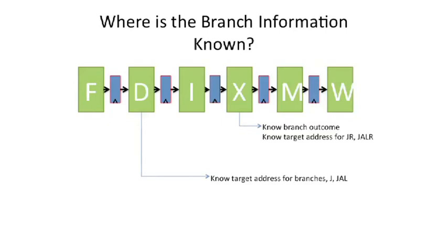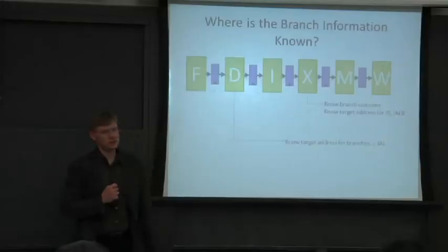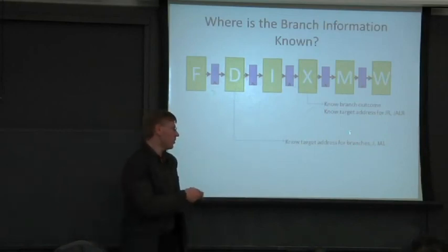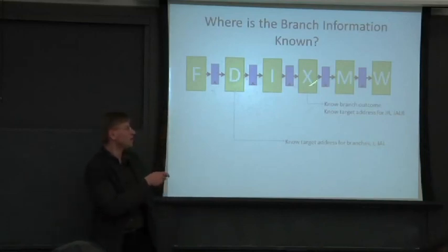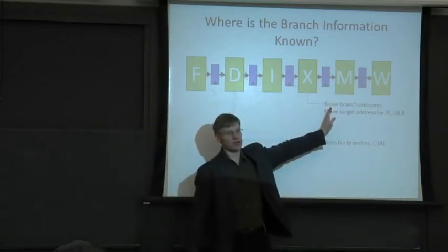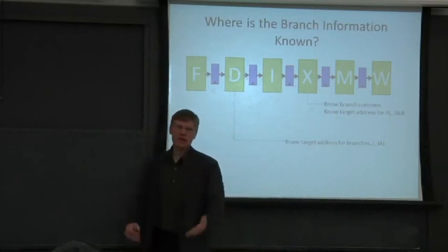Let's look at where everything gets known. The target address for branches, jumps, and jump-and-link will likely be known here. But that's not helpful unless we know which way the branch is going or the branch outcome. For jumps and jump-and-links, we know the outcome - it's taken. But for conditional branches, we may not know that until somewhere over here. We can't necessarily use that information until later in the pipe for branches in the naive approach.